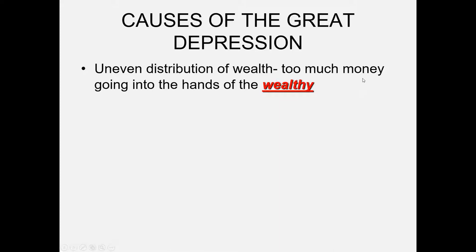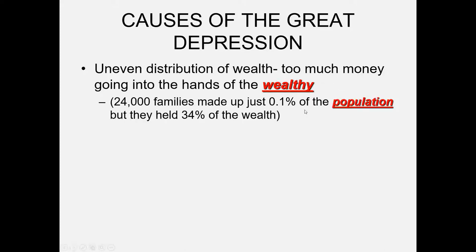Looking at the causes of the Great Depression: this wasn't caused by any one president or one thing. When we look at what was going on in the 1920s economy, we see a major maldistribution of wealth — too much money going into the hands of the wealthy while the lower class was not receiving this wealth. About a third of the nation's money supply, maybe more, was locked away in bank accounts of the wealthy, just sitting there not circulating in the economy. Just a tenth of a percent of the population was holding a third of the nation's wealth.